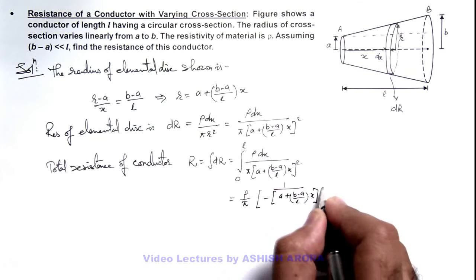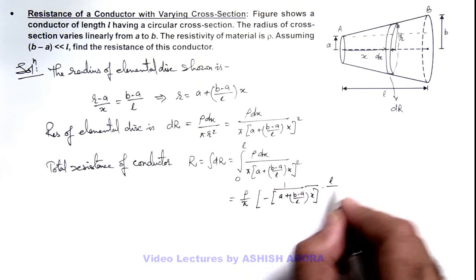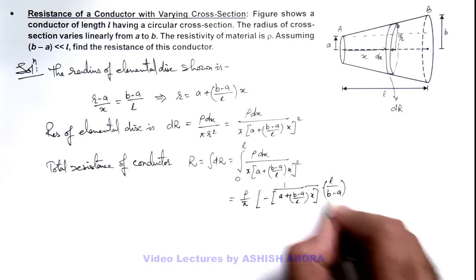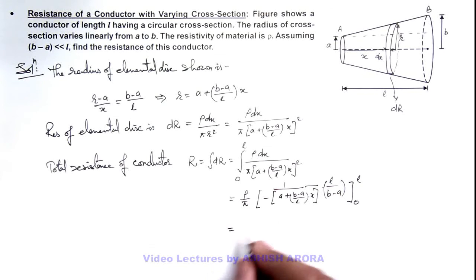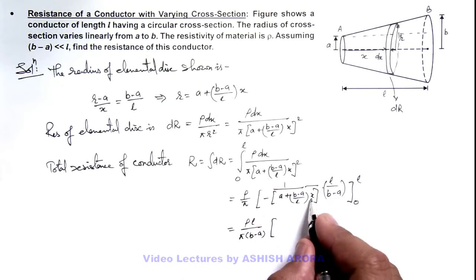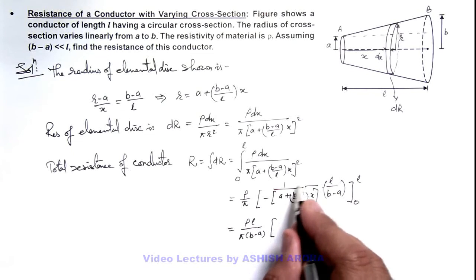Multiplied by l/(b-a), and we apply the limits from zero to l. So if we substitute the limits, you can see we are getting ρl divided by π(b-a), which can be taken out. When you substitute the value l, this l gets cancelled out—it is a + b - a, which is minus 1/b.